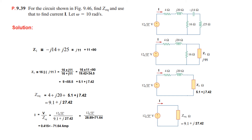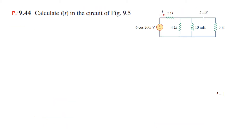Now let's go to the second problem, 9.44. This problem is slightly different from the previous one in that the voltage and the capacitance and inductance values are given in the time domain and not in phasor form. So first of all we need to convert everything into phasor form.